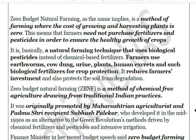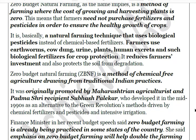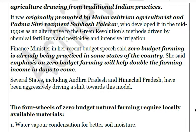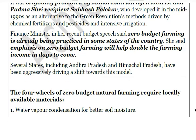Zero budget natural farming was originally promoted by Maharashtrian agriculturalist and Padma Shri recipient Subhash Palekar, who developed it in the 1990s as an alternative to the Green Revolution's methods driven by chemical fertilizers, pesticides, and intensive irrigation. Recently, the Finance Minister in her budget speech said that natural and zero budget farming is already being practiced in various states such as Himachal Pradesh and Andhra Pradesh, and identified it as a potential area to help double farmer incomes.